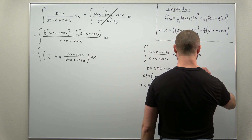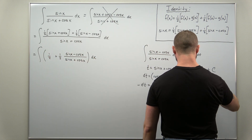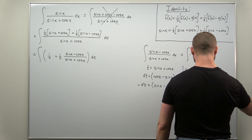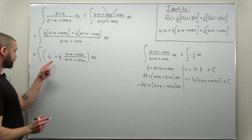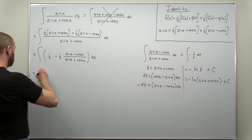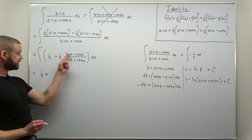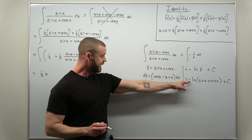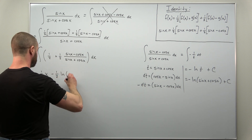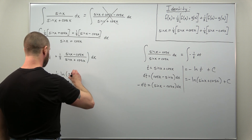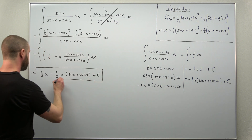Now we can easily convert the integral. Rewriting in terms of t, we have negative one over t times dt, which is very easy to evaluate — that comes out to be negative natural log of t. Plugging back in the substitution variable, t was sine of x plus cosine of x, so we get negative natural log of sine of x plus cosine of x.